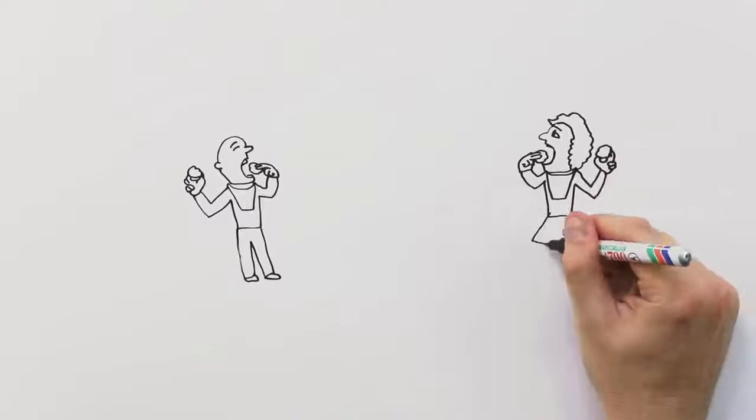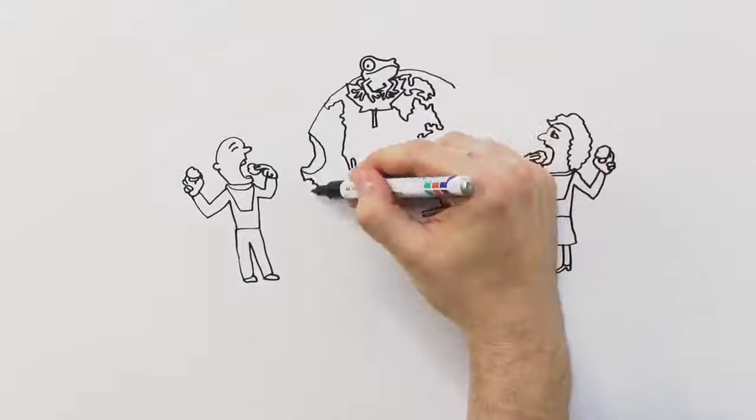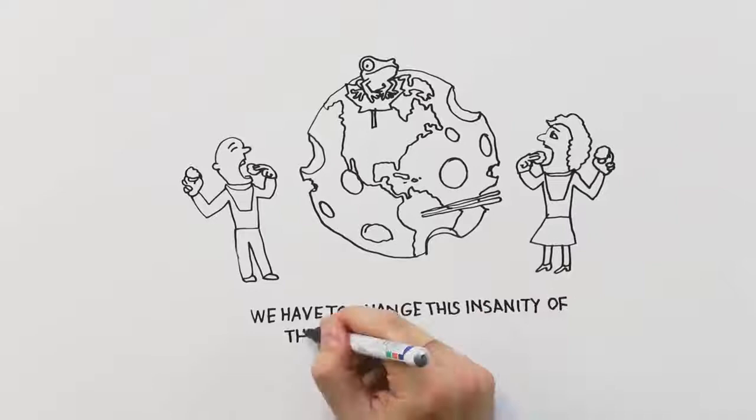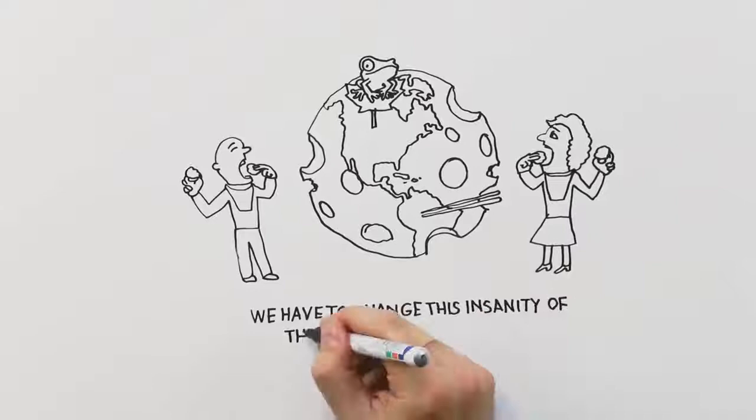We will continue to turn the forest into chopsticks, we'll continue killing off frogs in Canada, we'll continue eating up this big cheese we're sitting on until there's nothing left. We have to change this insanity of thinking that self-interest is the way to pursue our well-being as a species. The pursuit of self-interest destroys you as an individual, it destroys the groups that you're working in, and it completely undermines the legitimacy of relationships of power in any establishment.